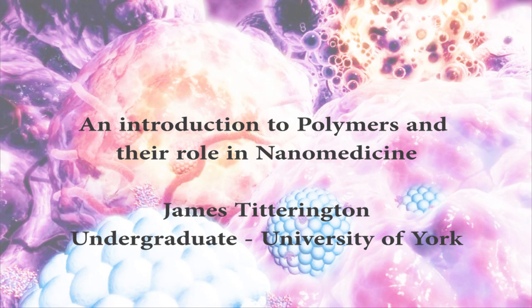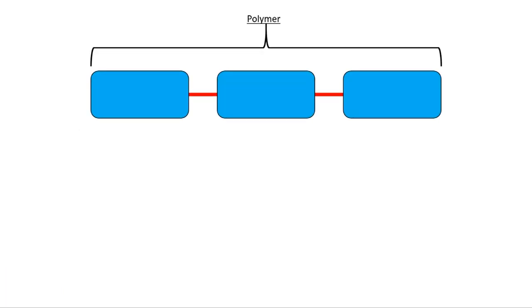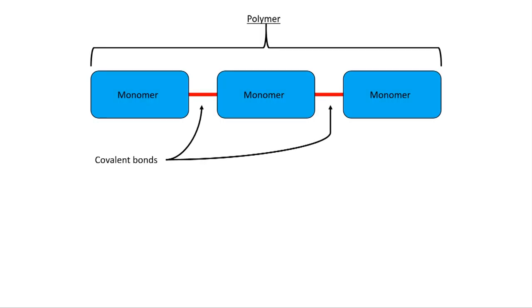Polymers and their role in our environment. Polymers are long molecular chains made up of smaller repeating units of molecules called monomers, held together by covalent bonds.